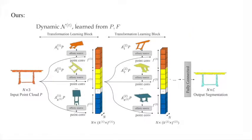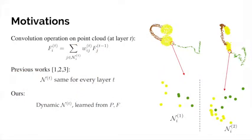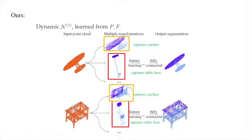We propose having a dynamic neighborhood for each layer. At each layer, we learn multiple different transformations of the original point cloud location. Because of the transformation, at different layers the neighborhood of each point is different. We learn these transformations from point cloud location p and feature f. The desired transformation should capture geometric transformation of the 3D shape for semantic understanding.